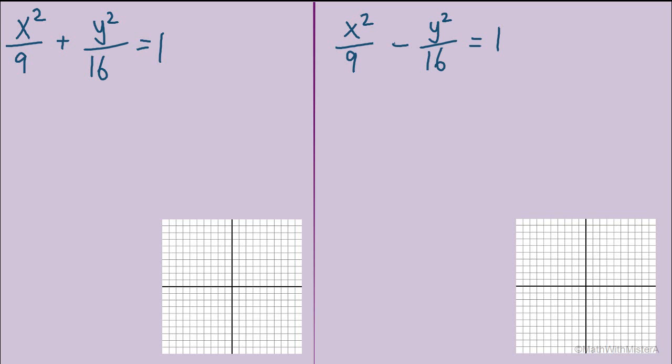We want to recognize that the graph of the ellipse will have x squared plus y squared in numerators with different denominators equaling 1, and the only difference when it comes to the hyperbola is that we now have a difference instead of a sum. So x squared over 9 minus y squared over 16 equals 1 will produce the graph of a hyperbola.